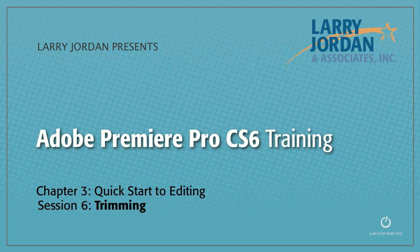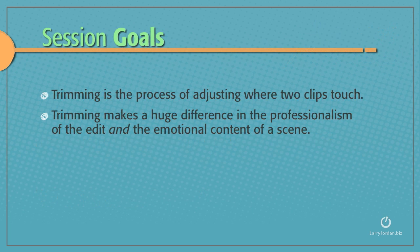This is Session 6: Trimming. Trimming is the process of adjusting where two clips touch. Trimming makes a huge difference in the professionalism of the edit and the emotional content of a scene.